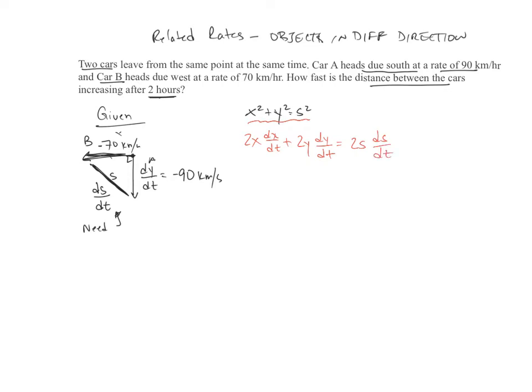Now, do I have information for all this stuff? DX/DT, yes I do. It's negative 70. DY/DT, yes I do. That's negative 90. DS/DT, that's what I'm solving for. Do I have an X? Do I have a Y? And do I have an S? Well sure I do.